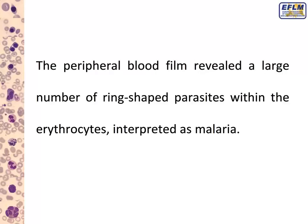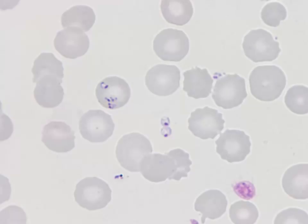The peripheral blood film was very important to get the diagnosis of this patient, because a large number of ring-shaped parasites within the erythrocytes were seen. These parasites were interpreted initially as a malaria infection. I will show some images now — I think the images are very representative of the disease, and I will explain slowly all the morphological findings.